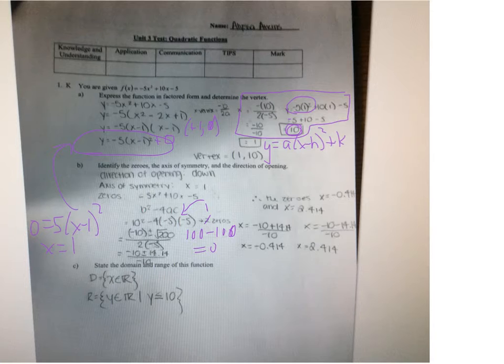Alright. So the axis of symmetry is right. That's the same as the vertex. And the direction of opening is down. So that's correct as well. And that's from the negative a in front.